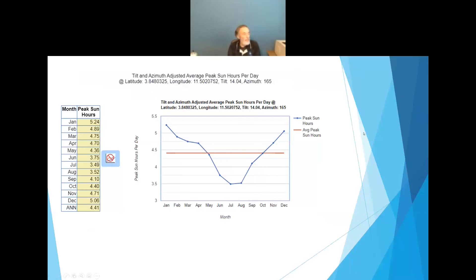The output comes back in both tabular and graphical format, and the graphical is really helpful. For instance, in Yaoundé — it's in the northern hemisphere — you might think you get the most sun in the summer. But no, because you're below the Tropic of Cancer, you get the most sun in the winter months when the sun is to the south of you, whereas in the summer months it's north of you. In this scenario, it's actually behind the panels, and you wouldn't necessarily know that if you don't live there.